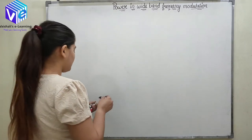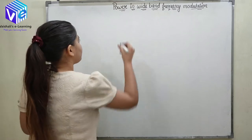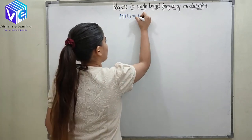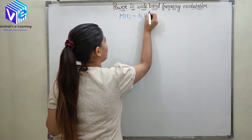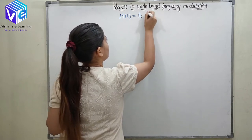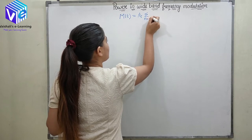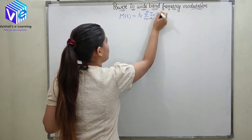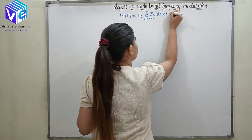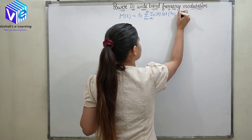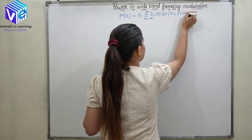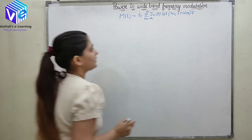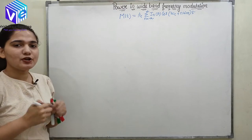The frequency modulated signal MT was given by — as I have already discussed — AC summation N equals minus infinity to infinity, Jn(β) cos(ωC + N·ωM)T. This represents the modulated signal.